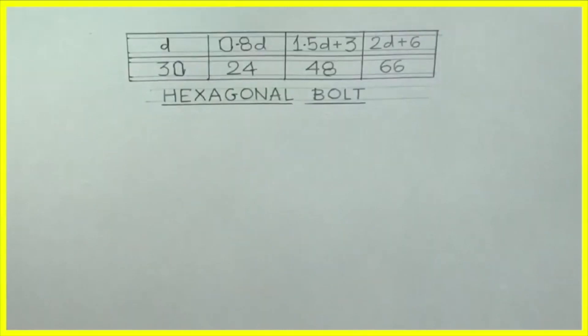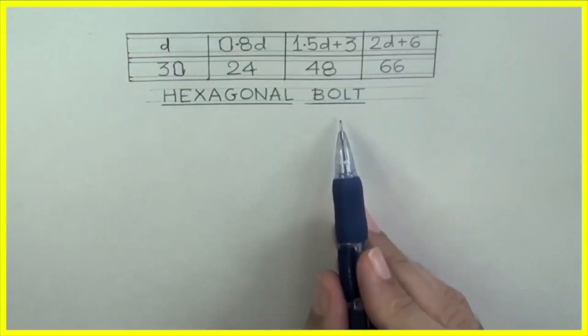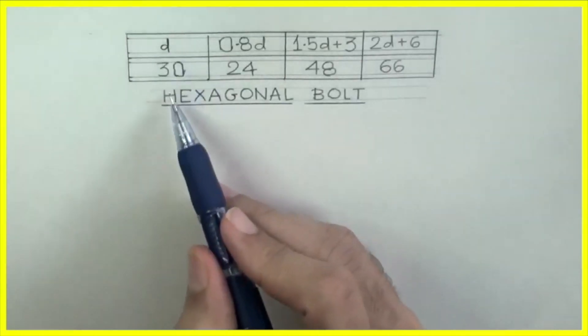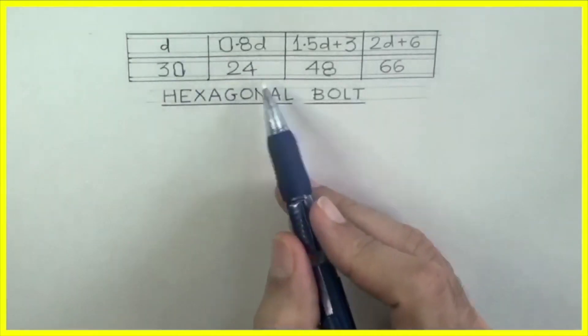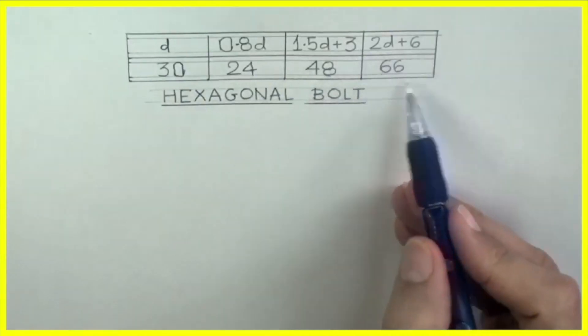First we have to write d equals to 30. Then we need to find out all these values. For a hexagonal bolt, d equals to 30, 0.8d equals to 24, 1.5d plus 3 is equal to 48, and 2d plus 6 is equal to 66.